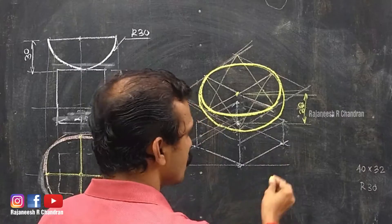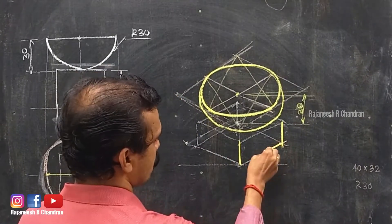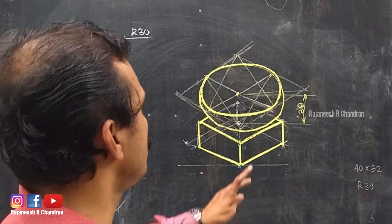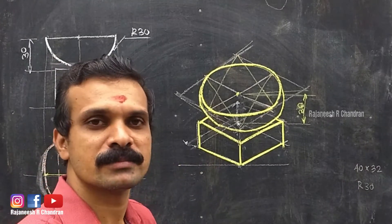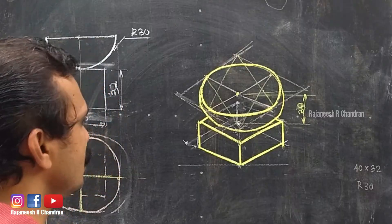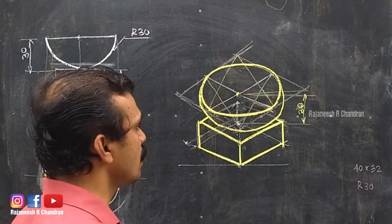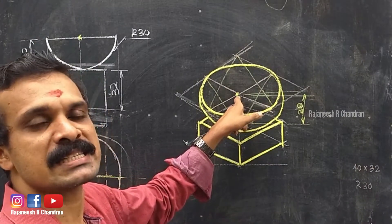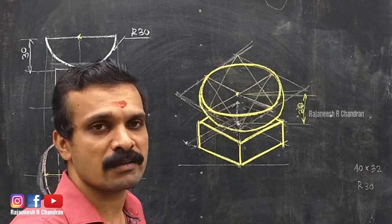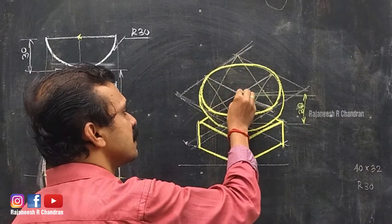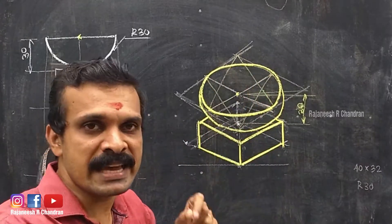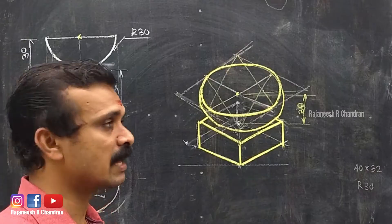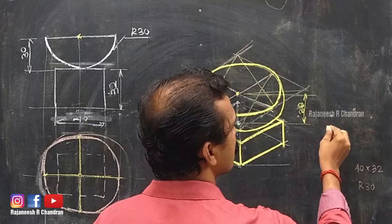We have now completed the isometric projection of the hemisphere placed over the square block. For the square block, only the visible portion needs to be drawn. To recap: draw the isometric of the square block first, obtain the center of the top face, then locate the center of the hemisphere. Through that center point, construct the layer — a box — that will contain the ellipse.